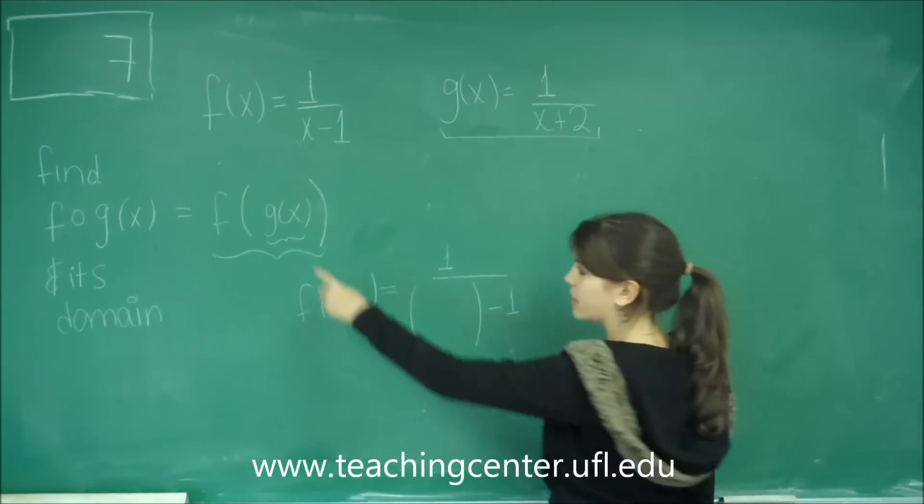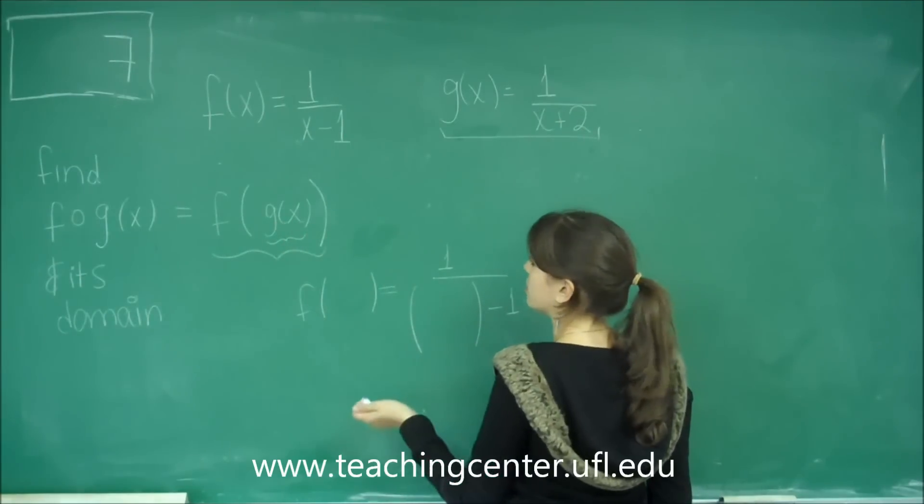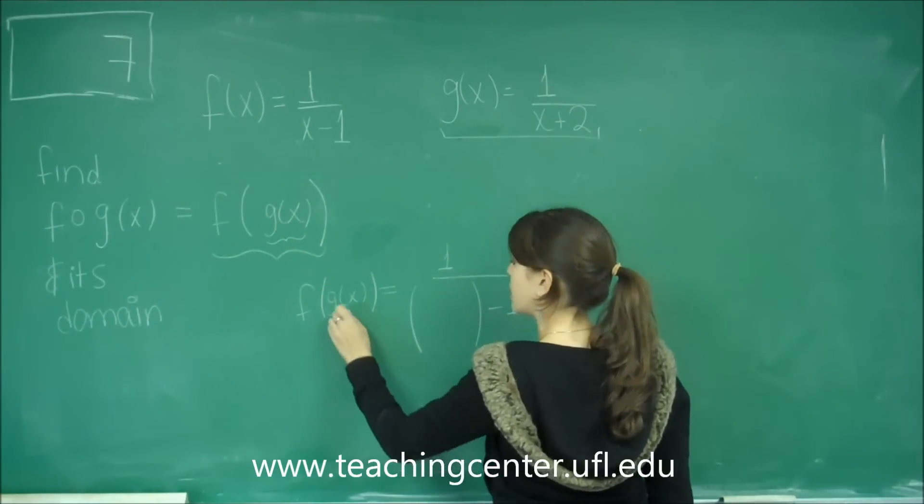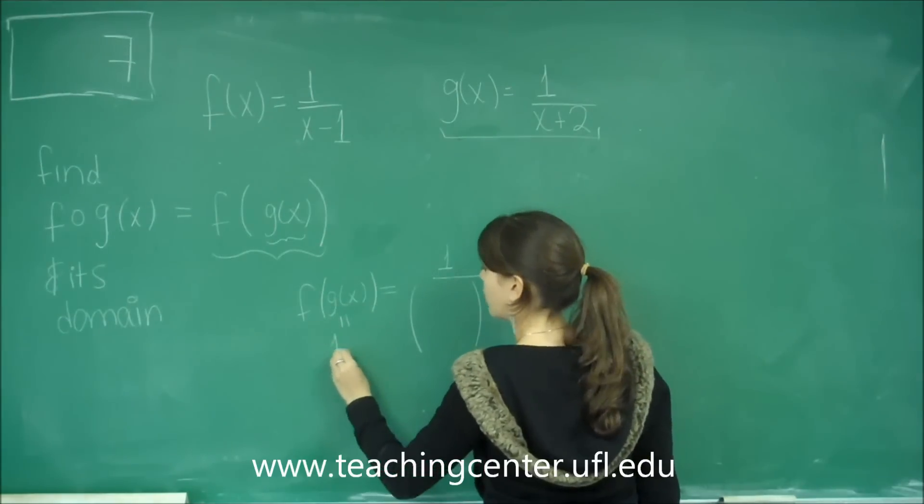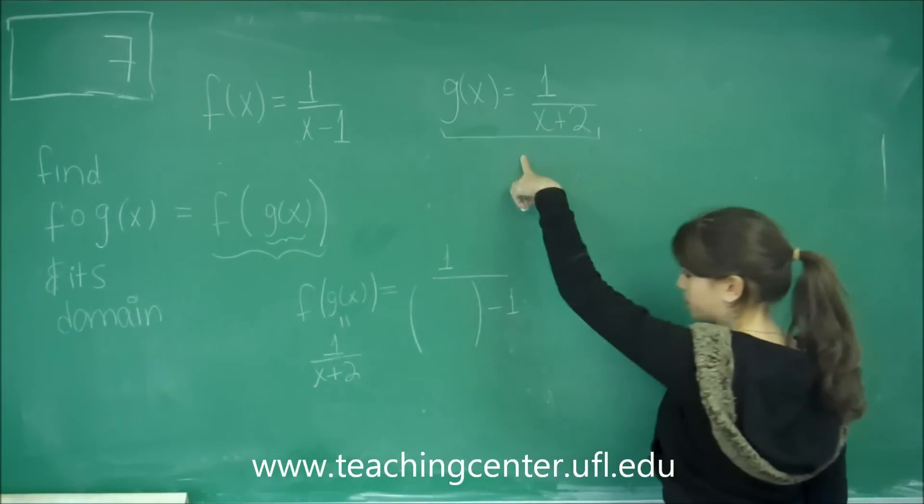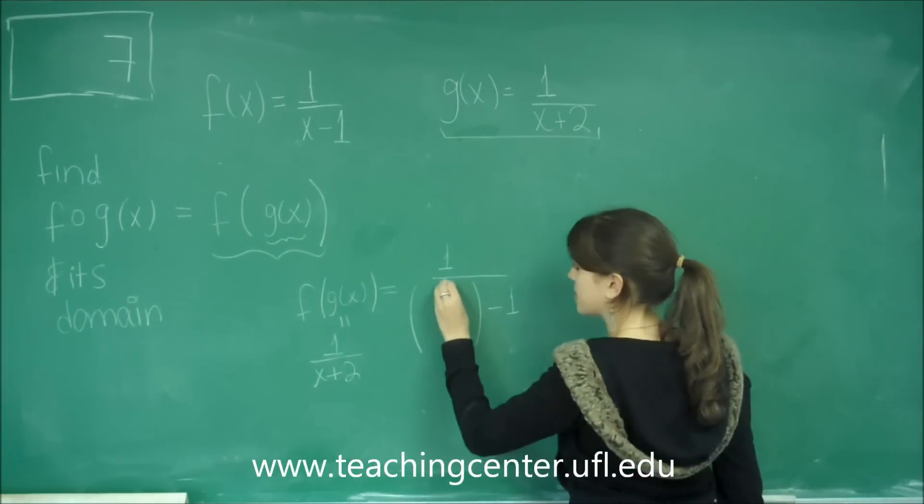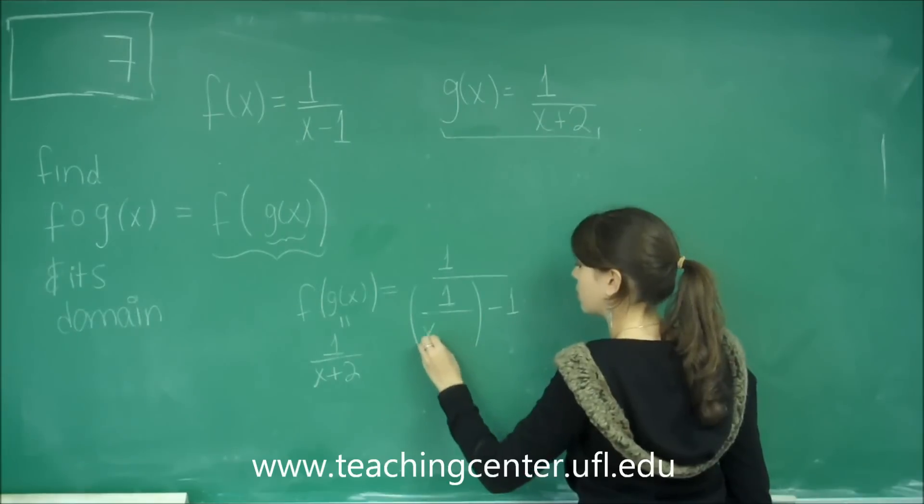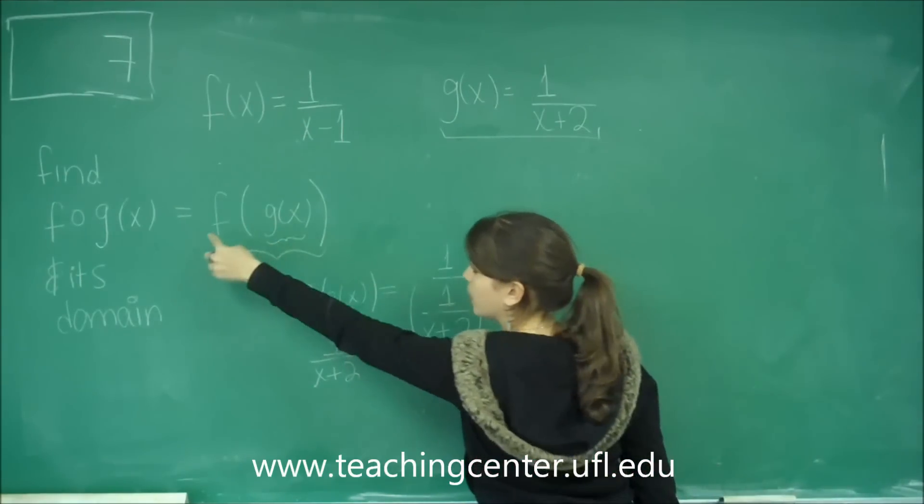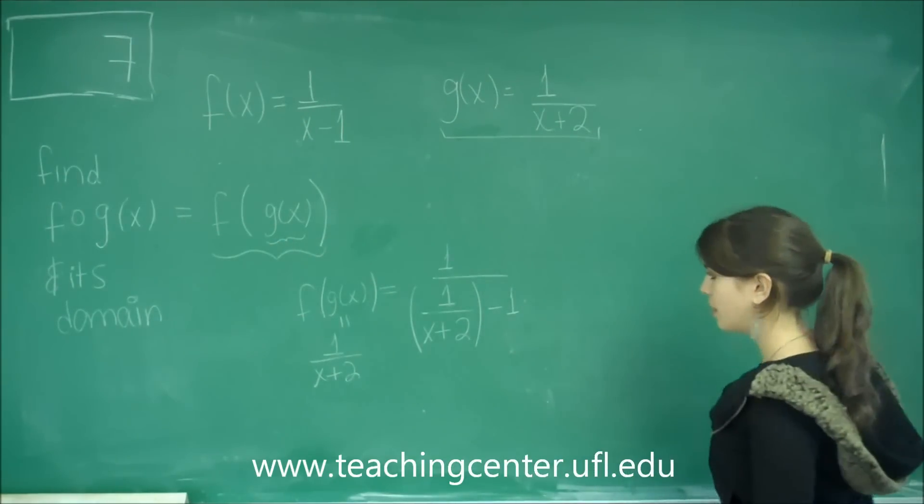Now what we want inside is g of x, which is the same thing as 1 over x plus 2. So that's what we're going to put inside of this parenthesis, because this is representing the x value of f.